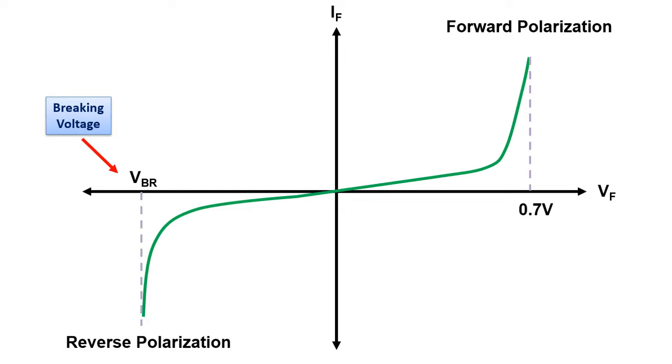The current voltage graph of the Zener diode is as here. In the case of forward polarity, that is, when it is connected straight, it starts to pass current after a voltage of about 0.7 volts like a normal silicon diode. In the case of reverse polarity, it starts to pass current after the breakdown voltage and starts to regulate.